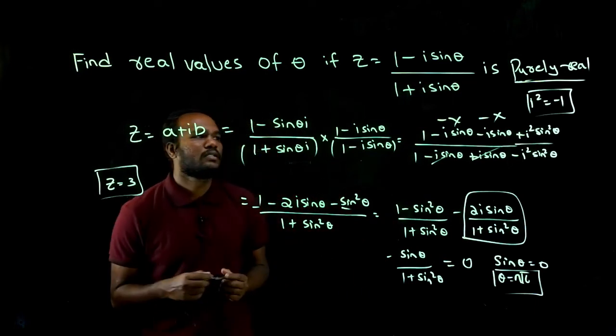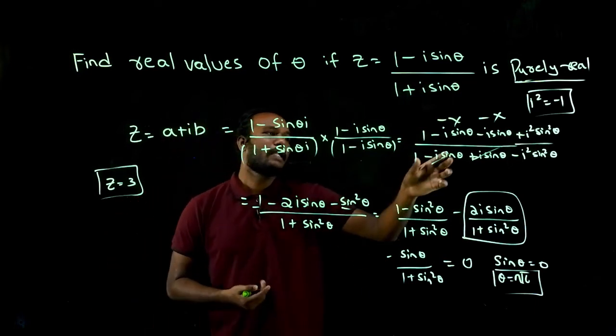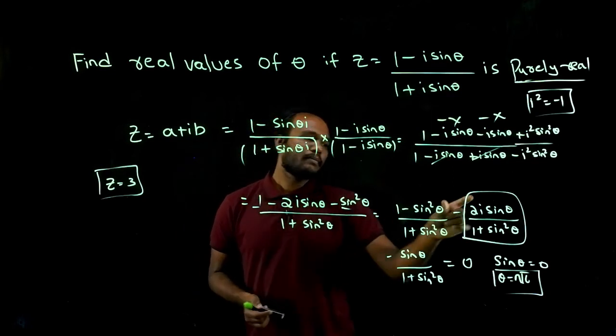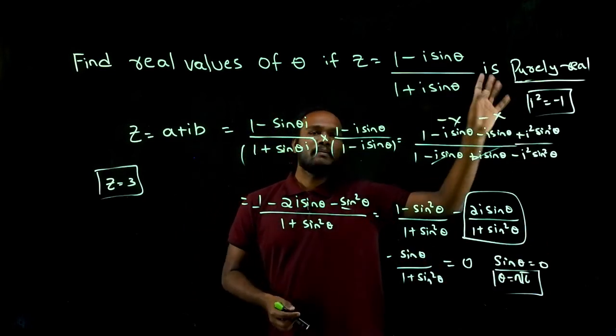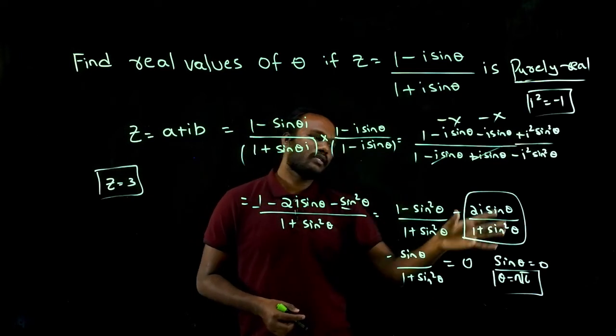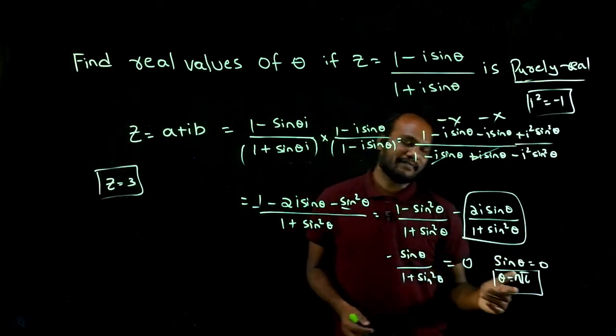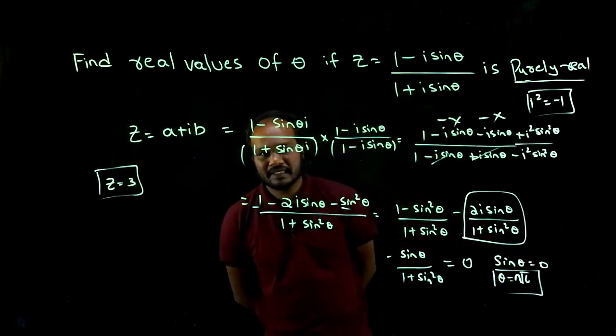See, just the split is this is what we have to say. All the real numbers we have to consider one time, all the imaginary numbers we have to take one side. Purely real means imaginary part equal to zero. What is the imaginary part? Except i, whatever is there, that is the imaginary part. So imaginary number equal to zero. With this, we get the sine theta value. Is that okay?